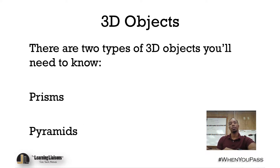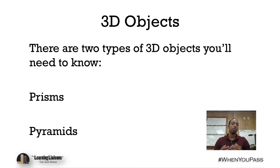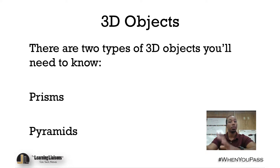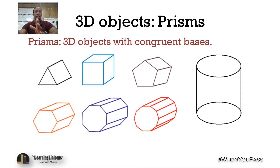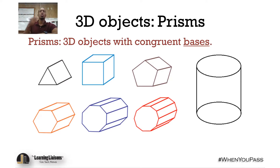Moving on to 3D objects: there are two main types of three-dimensional objects that you'll need to know about, and those are prisms and pyramids. Let's begin with prisms. A prism is a 3D object with congruent bases, and it has two bases.